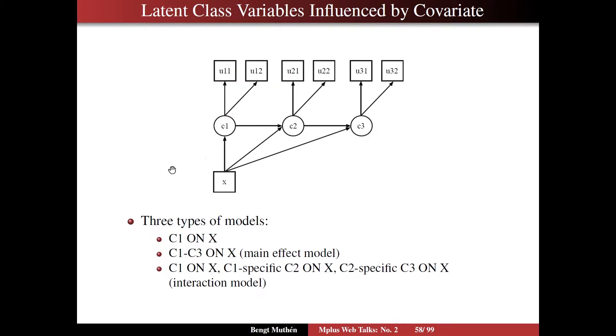This model really, as it's drawn, corresponds to the second type, C1 to C3 regressed on X. And I'm going to call that the main effect model and contrast that with an interaction model that we're going to take a look at in detail. And it's actually the model that's shown in the user's guide for M-plus in example 8.14. But I don't think one should jump straight to that model, but instead first look at these two models and then compare all of them using likelihood ratio chi-square difference testing before the interpretations start.